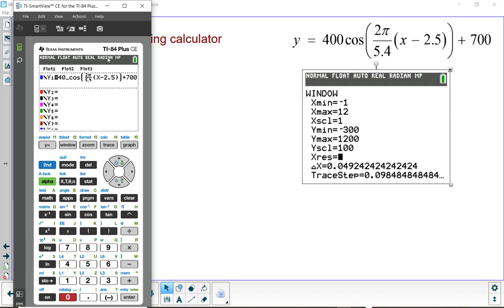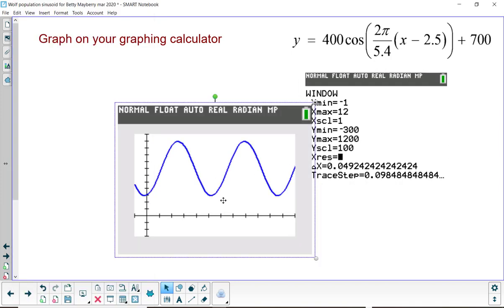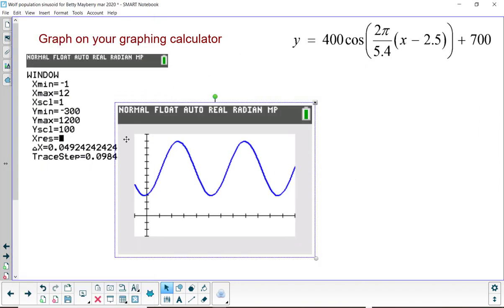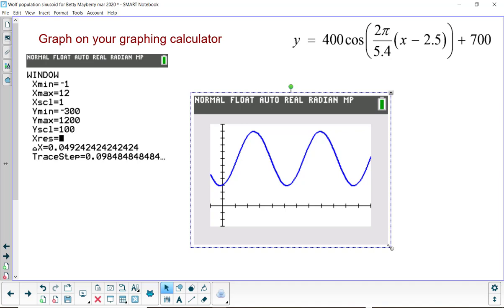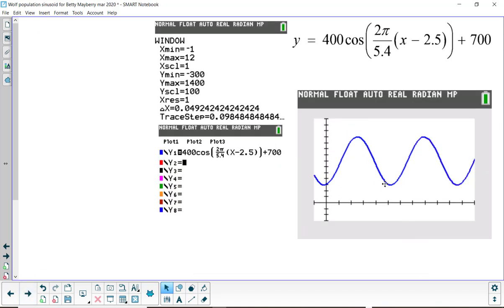And then I can press enter anywhere. Make sure you're in radian mode. I forgot to check that. Radian mode right up here. That's under mode. Go ahead and press enter and then graph. And it kind of looks like what we wanted it to. And I summarized that on the next page here. So, you can see the window, the y equals, and what the graph looks like.